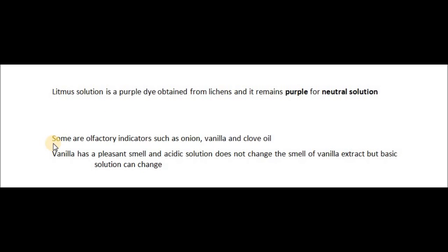There are some other types of indicators called olfactory indicators. Olfactory means they are related to the smell or odor of the medium. Olfactory indicators generally include onion, vanilla, and clove oil. Vanilla has a pleasant smell, and for an acidic solution it does not change the smell of vanilla.